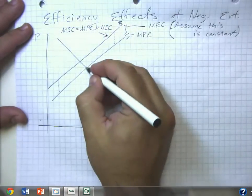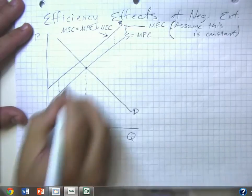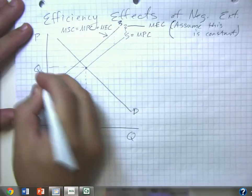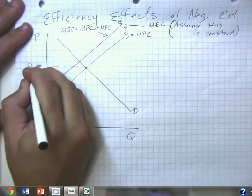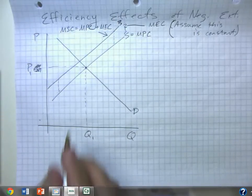So here's our market equilibrium. If we have an unregulated market, that's the price, and over here we have the quantity. And what can we say about efficiency?